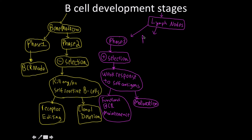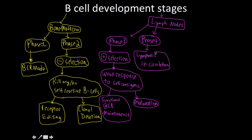Phase four is the next thing happening in the lymph nodes. This is where we have lymphatic recirculation of the immature B cells — they're cycling in and out of the lymphatic system. Eventually, though, the immature B cell gets presented with an antigen by a dendritic cell or a macrophage, and then we enter into phase five.